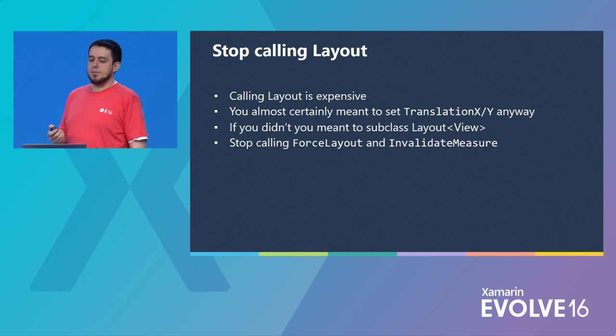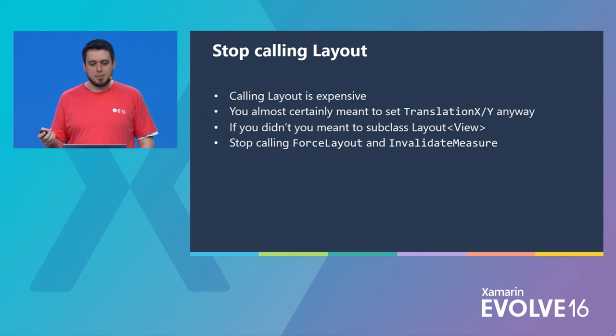If you're animating a view across the screen, the translation properties are far more efficient. Stop calling layout — especially the force layout method. Force layout is very expensive, and you almost certainly meant to use the translationX and translationY properties instead. If you do want to call layout, you should do it by writing a custom layout.